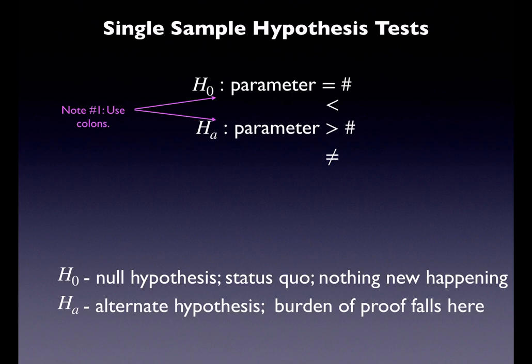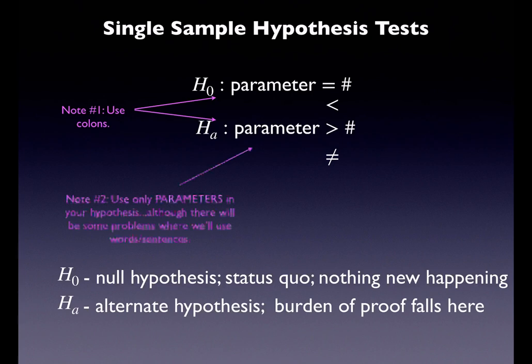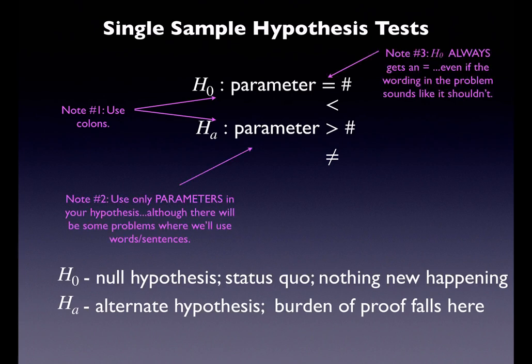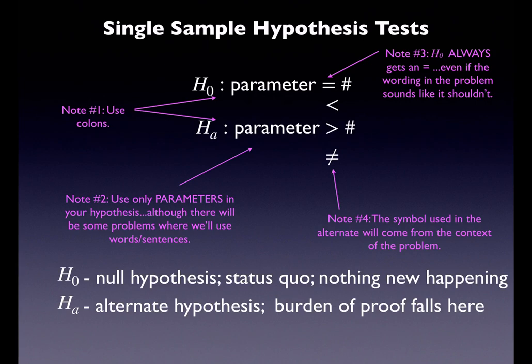Always use colons after H₀ and Hₐ. You're always going to use parameters — I only ever want to see a mu or a p; I shouldn't see an x-bar, and I shouldn't see a p-prime. The null should always have the equal sign. Even if it sounds like it should be less than or equal to, we always put the equals on the null. The symbol for the alternate will come from the context of the problem.